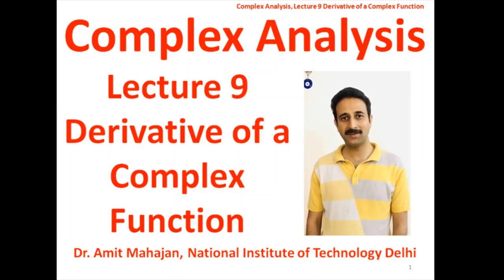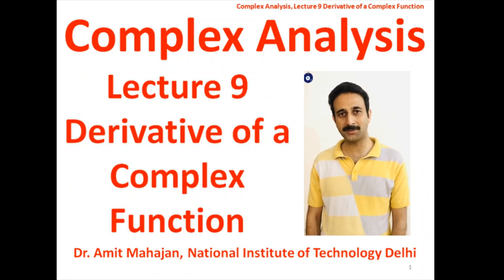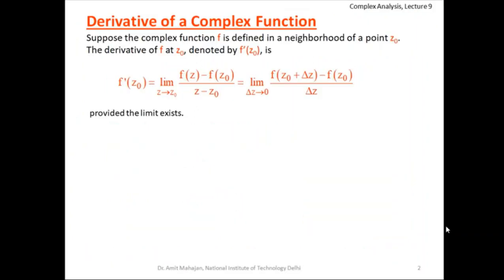Hello everyone, welcome back to this lecture series on complex analysis. Today we are going to learn about the derivative of a function of a complex variable. Suppose the complex function f is defined in a neighborhood of point z-naught. The derivative of the function at the point z-naught is denoted by f'(z₀), or we can also write it as df/dz at z-naught, and is the limit of